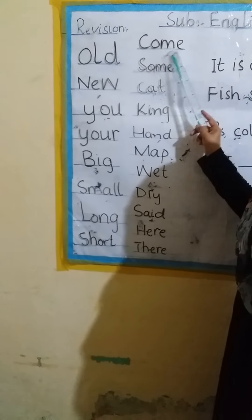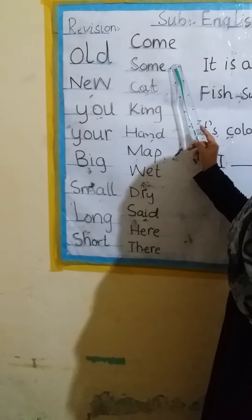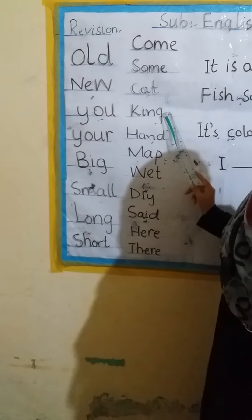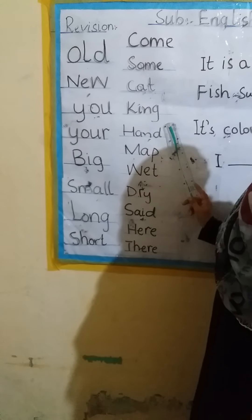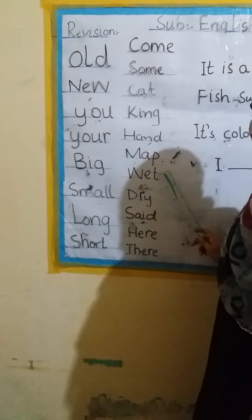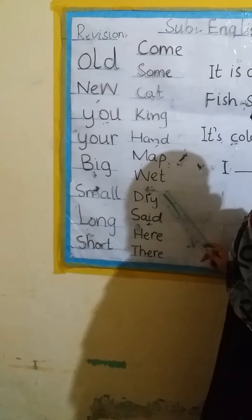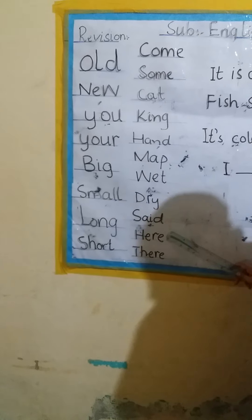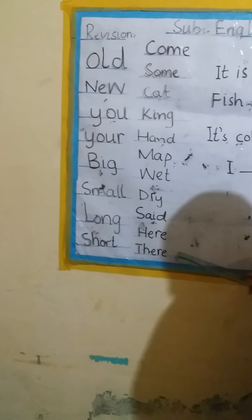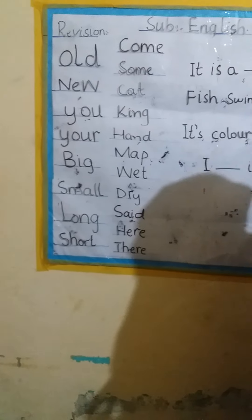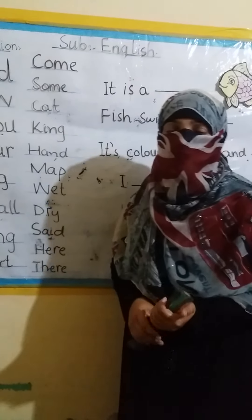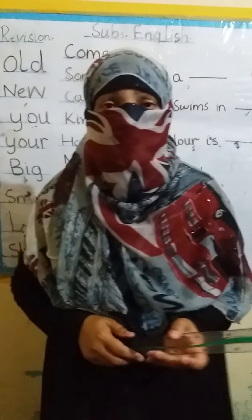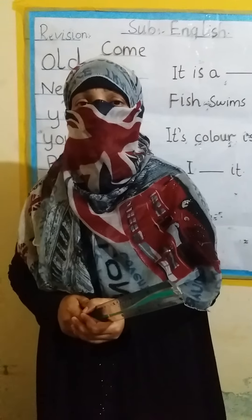Come, Some, Cat, King, Hand, Map, Wet, Dry, Sad, Here, There. Okay students, today we will learn a new thing. We will learn how to make a sentence and we will fill these blanks also. Now see here.